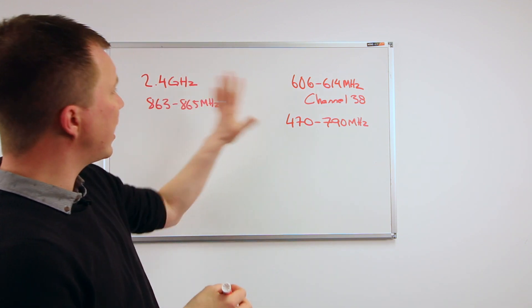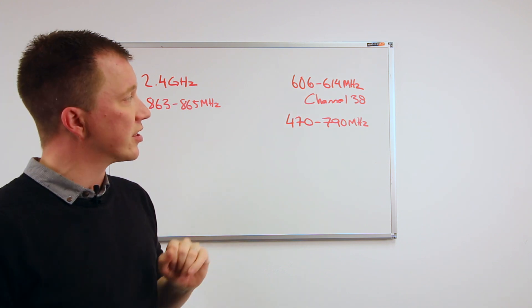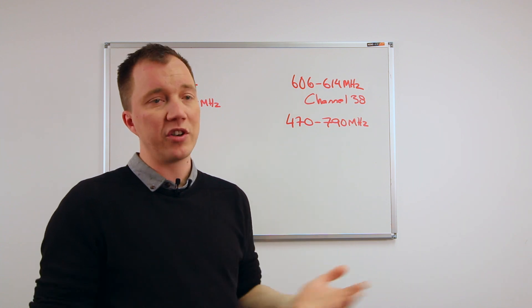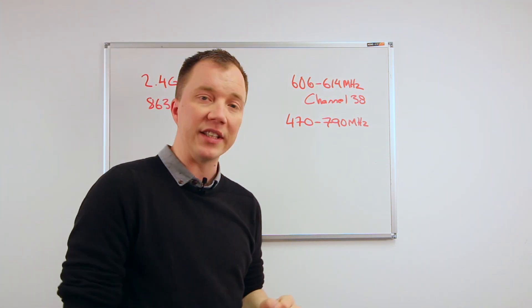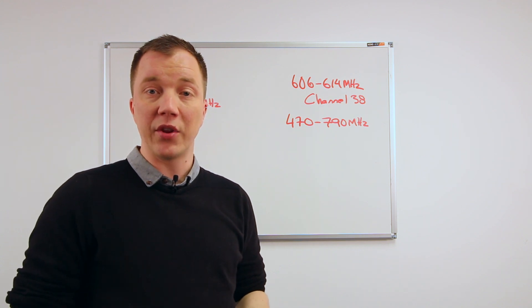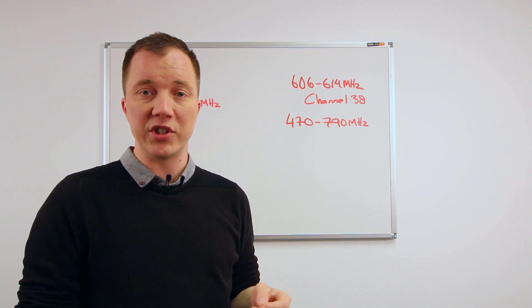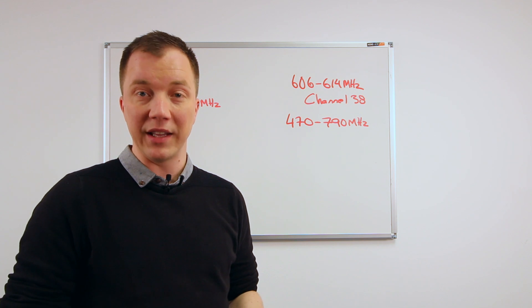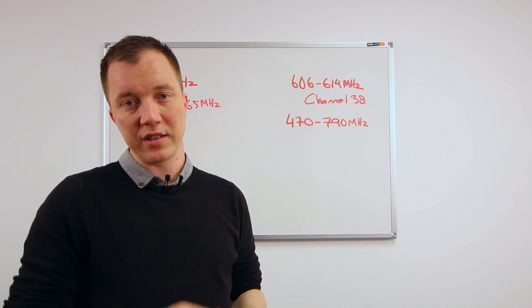So we really have four options in the UK: license-free, 2.4 or 863 to 865; the more common usage, certainly for anything with a larger channel capacity, we would either use channel 38 or the interleaved blocks between 470 to 790. All licenses in the UK are obtained through Ofcom, who are the regulator in the UK, and the information from which you can obtain a license for your radio microphone will be made available at the end of this session. Thanks for taking the time and hopefully that cleared a few questions on licensing for you.